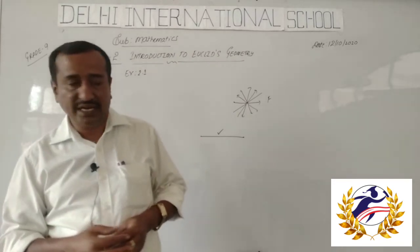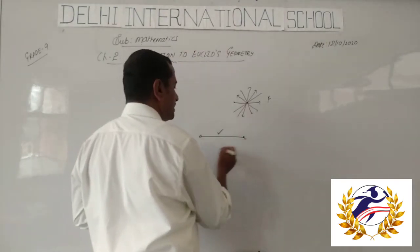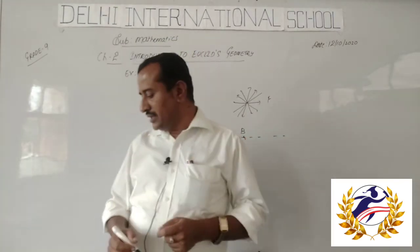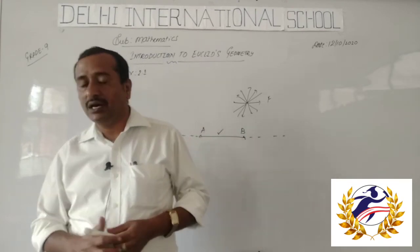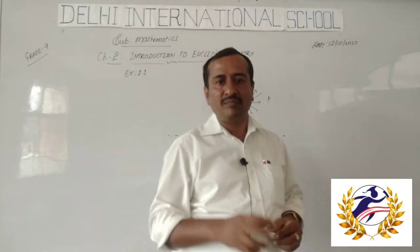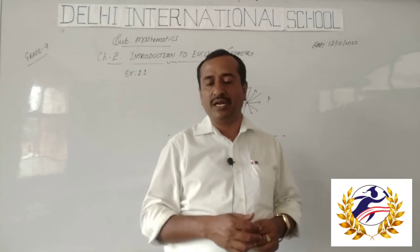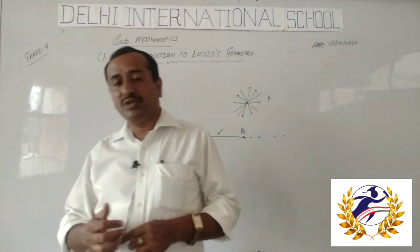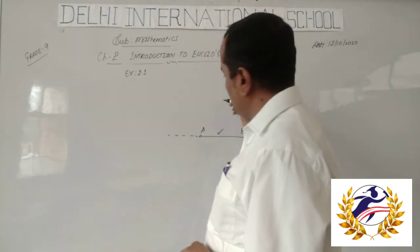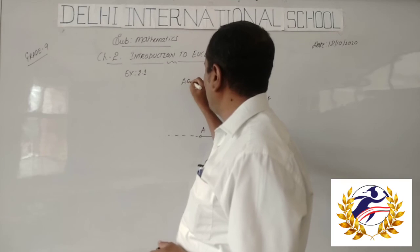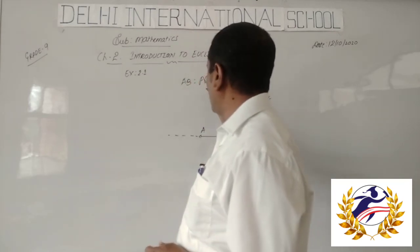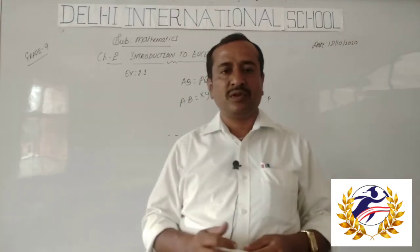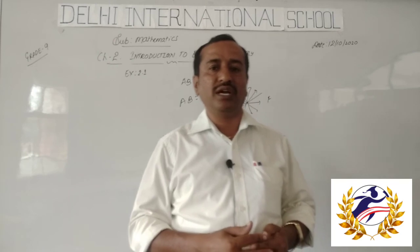Question 3: A terminated line can be produced indefinitely on both sides — this is true, as a line segment can be extended indefinitely. Question 4: Two circles are equal if and only if their radii are equal — this is also true. Question 5: In the figure, if AB equals PQ and PQ equals XY, then AB equals XY — since PQ equals XY, we substitute and get AB equals XY, so this is true.